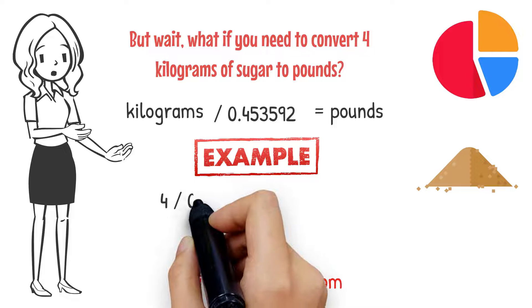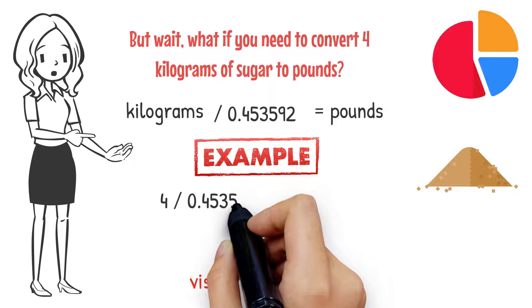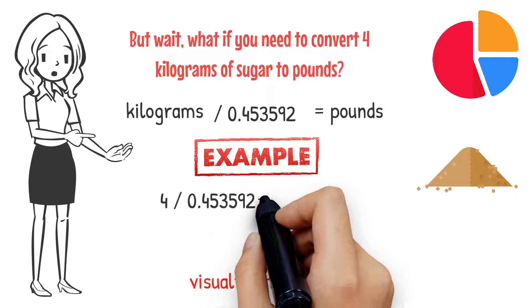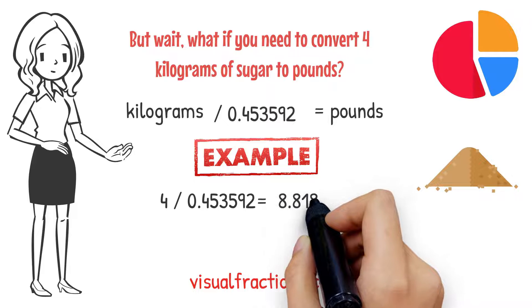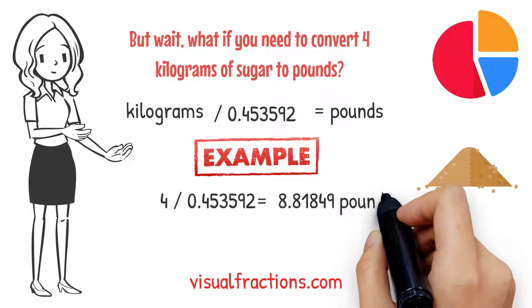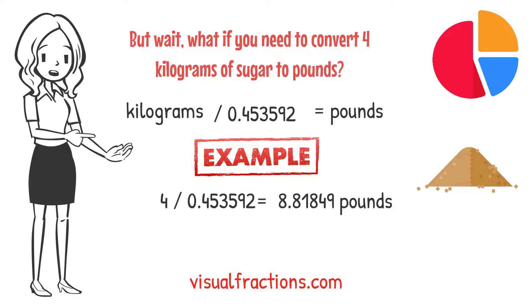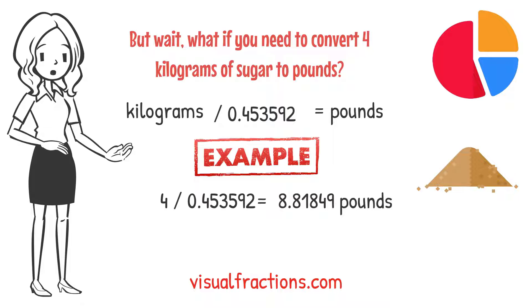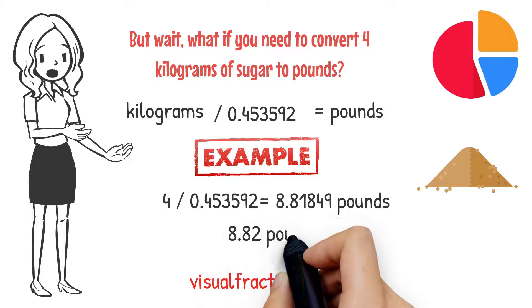We start by dividing 4 by 0.453592. This gives us approximately 8.81849 pounds. Remember to round this number to the nearest hundredth, so our final answer is approximately 8.82 pounds.